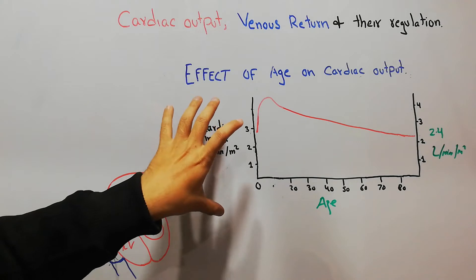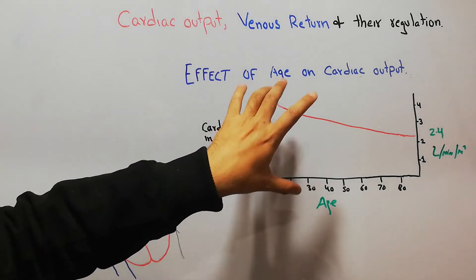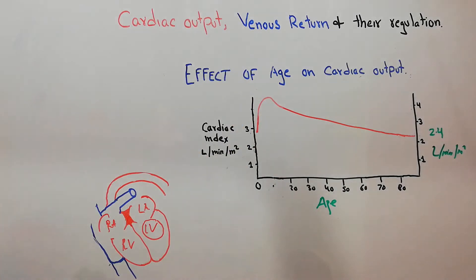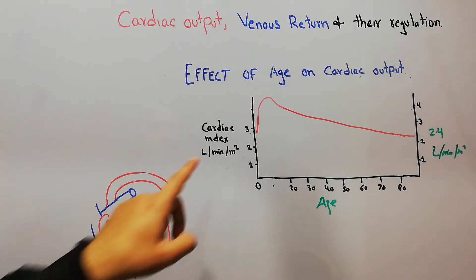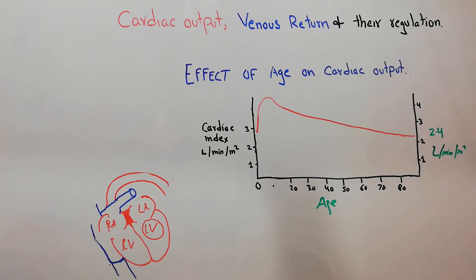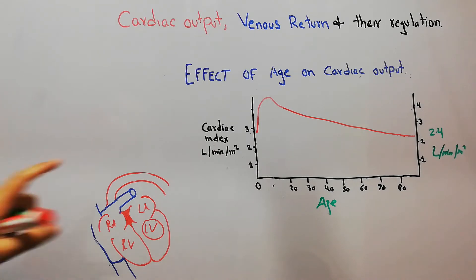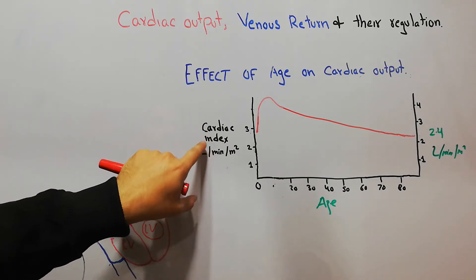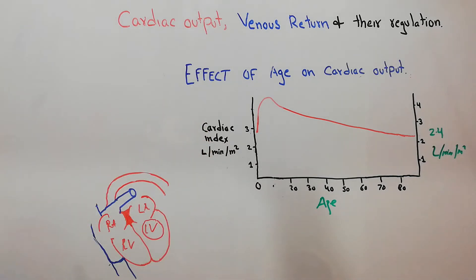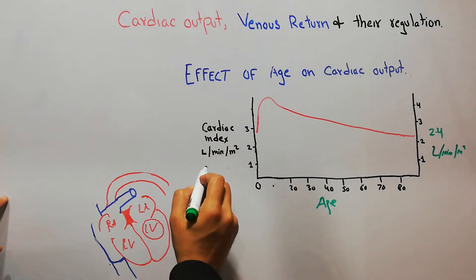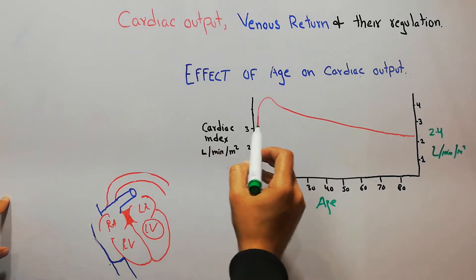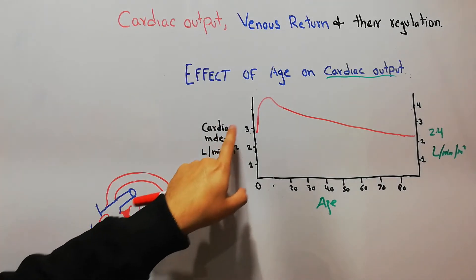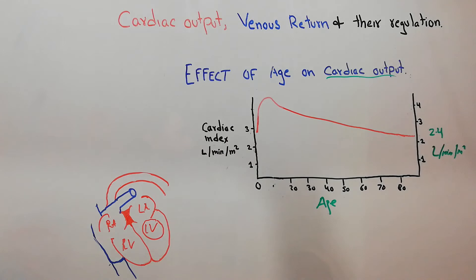In this lecture we are specifically focusing on the effect of age on cardiac output. We also discussed in the last lecture the cardiac index, which is basically the amount of blood supplied per minute per square meter of the body. The cardiac index increases when the cardiac output increases.